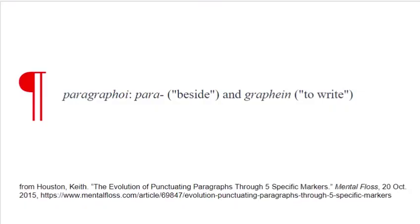Surprisingly, in fact, the first little element that was added for readability was a paragraph marker. 'Para' means beside and 'graphing' is to write, so they'd make little marks beside the text to indicate that there was a shift between one big idea and another big idea.